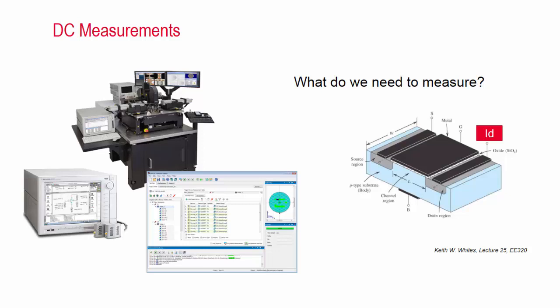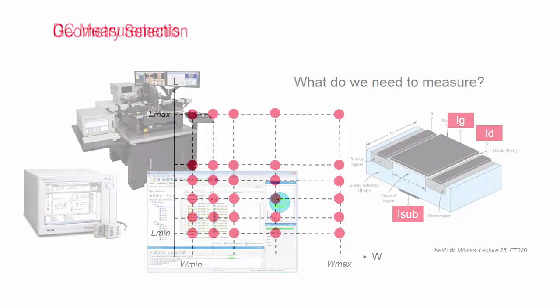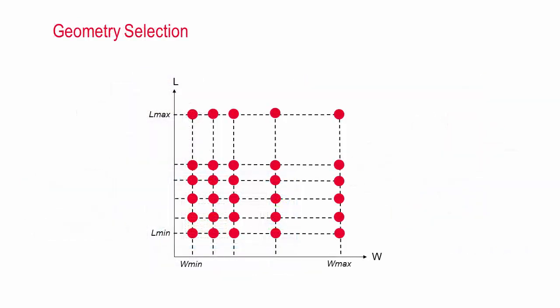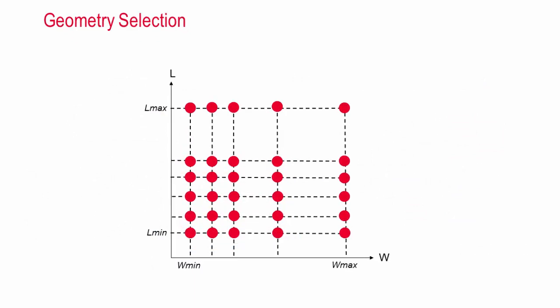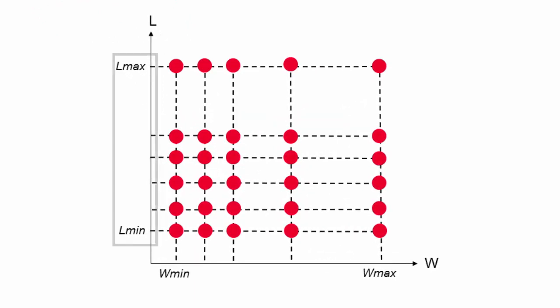The answer is drain current ID, substrate current ISUB, and gate current IG. IG is especially required when the gate oxide thickness is below 3nm. We want the designer to leverage accurate models regardless of the device geometry, so we need to collect data across different geometries. As shown here, we have gate lengths ranging from Lmin to Lmax, and gate width ranging from Wmin to Wmax.